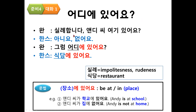So, one set: 실례합니다. Andy 씨 여기 있어요? 한 set: 아니요, 없어요. 그럼 어디에 있어요? 식당에 있어요. So, one set: 실례합니다. It means, excuse me.